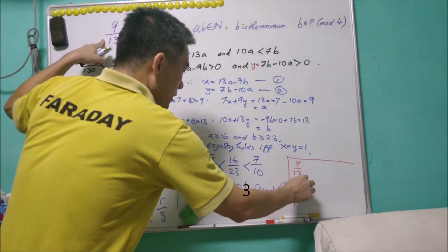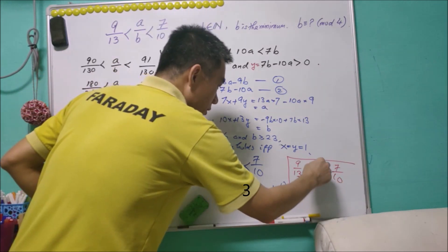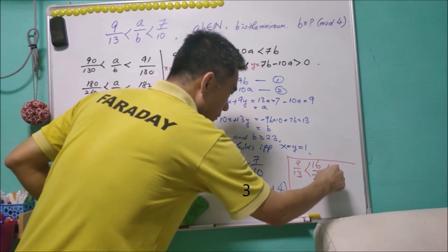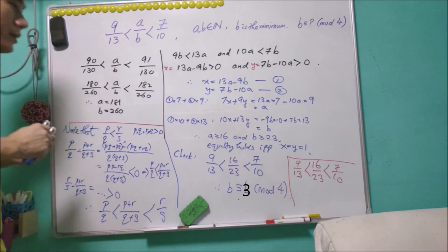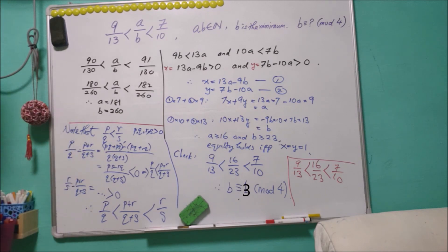So from here we know that for 9/13 and 7/10, the number in between it is 16/23. This must be the number in between these two fractions, and you will see that the denominator is not very big. However, we do not know 23 is the smallest denominator. Nevertheless, it gives me a better idea of the fraction a/b.